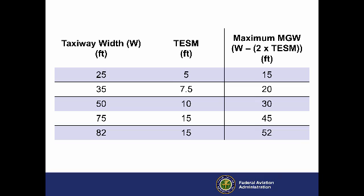Although there are only five MGWs, there are eight TDGs. This is because designing fillets to accommodate the longest airplane that fits on a straight taxiway section would require larger fillets than are needed if the taxiway system will only be used by shorter airplanes. For this reason, we divided each of the 25-, 50-, and 75-foot taxiway widths into two separate TDGs.